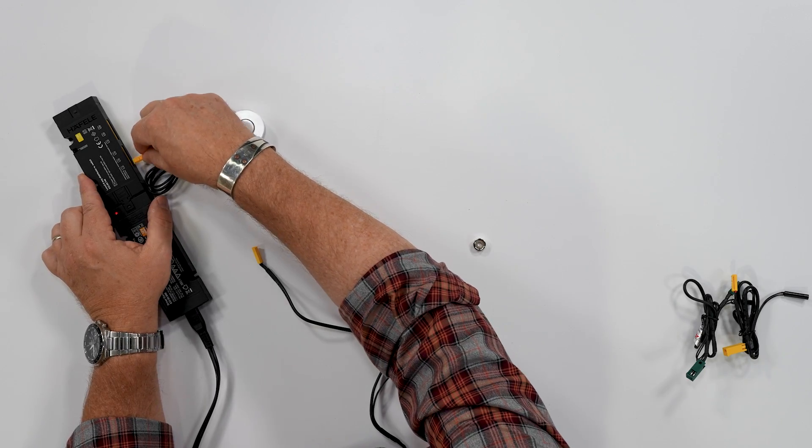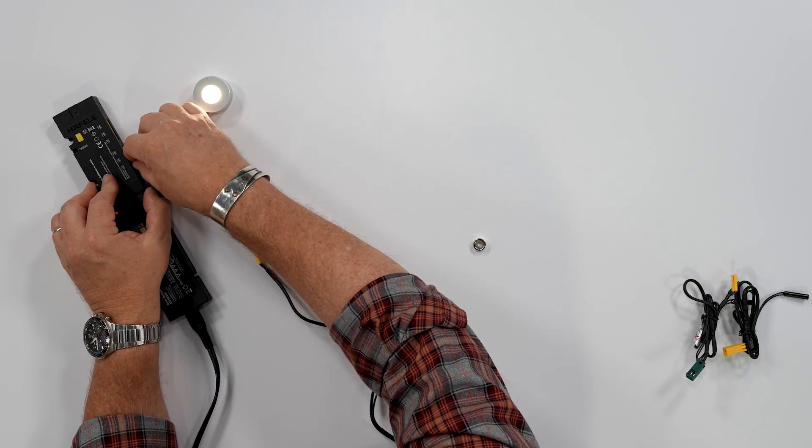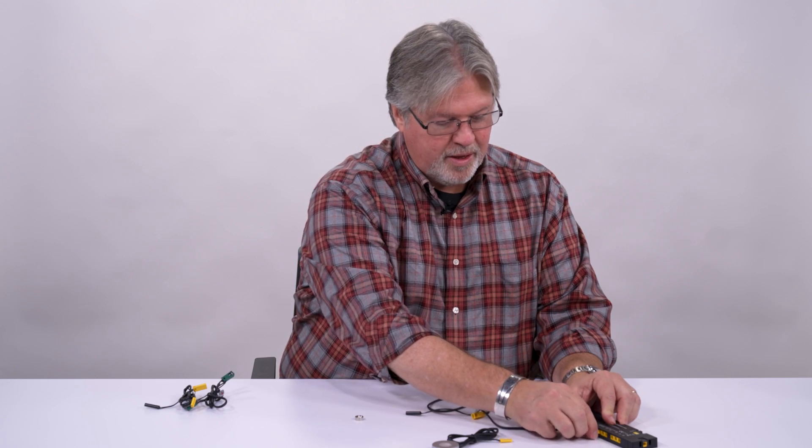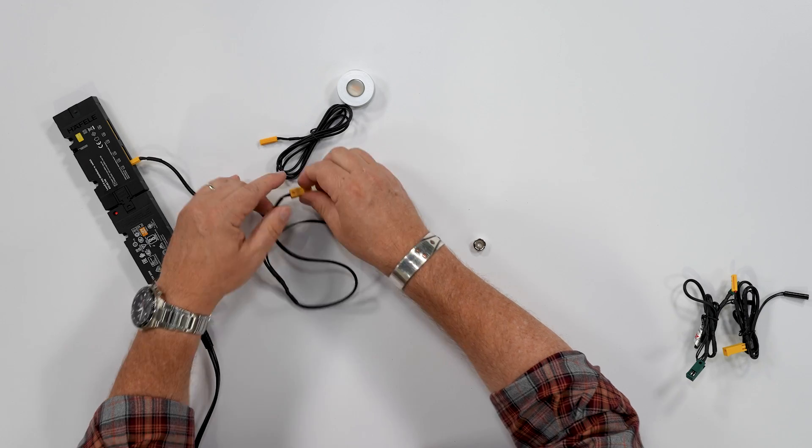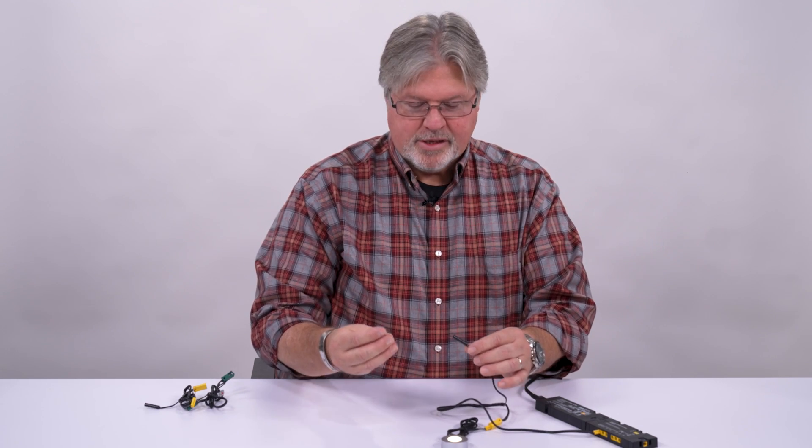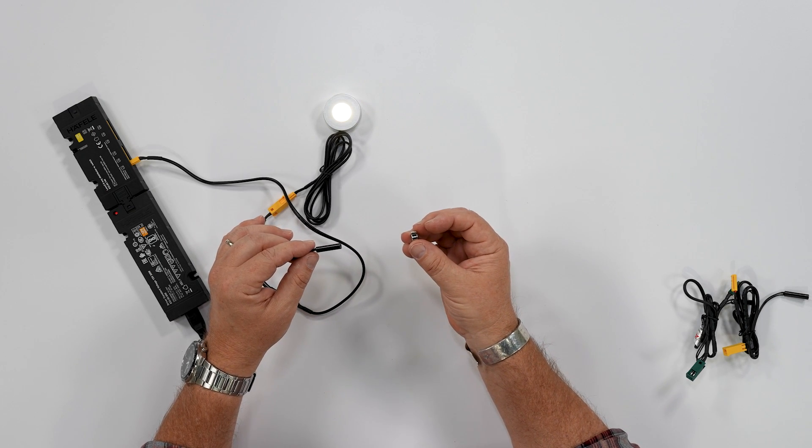If I were to plug this light directly into the distributor, you can see that it's on. So now we're going to introduce the switch in between the power supply and our luminary. So now when the magnet gets close to the switch, the luminary will be off. As we pull the magnet away, the luminary will light.